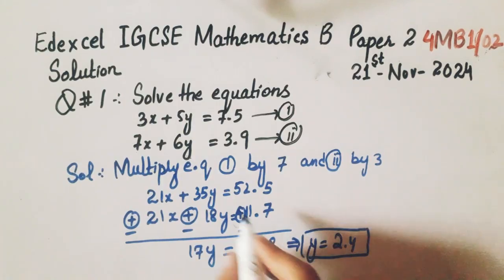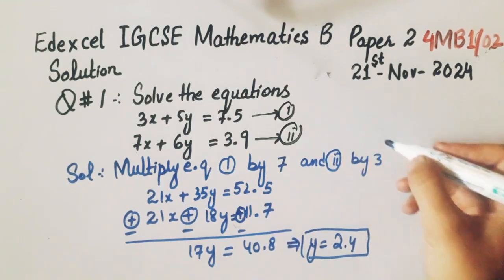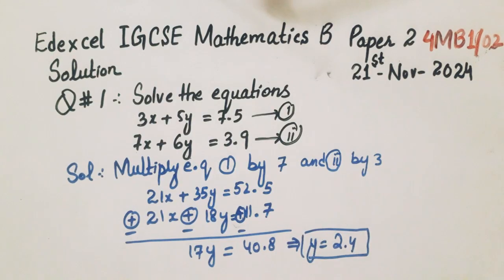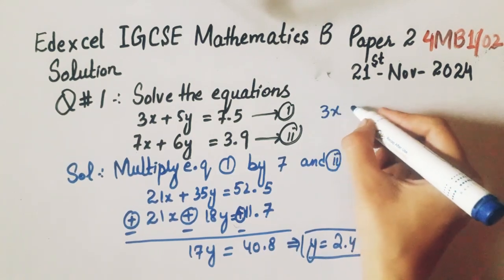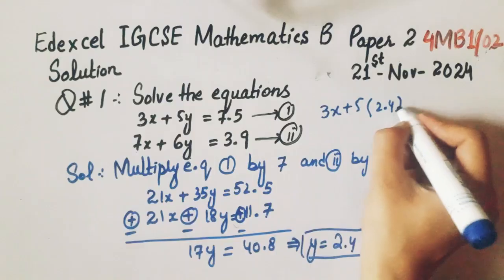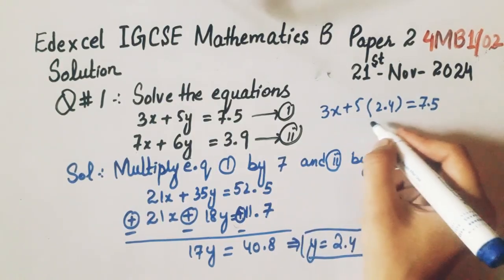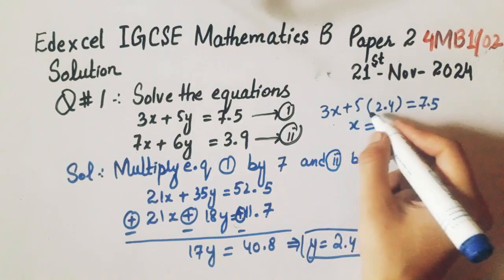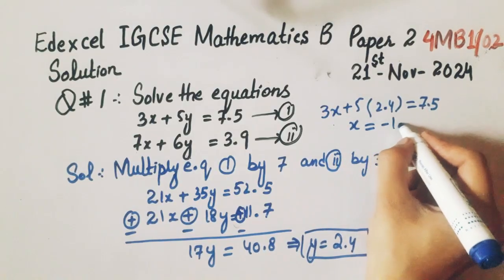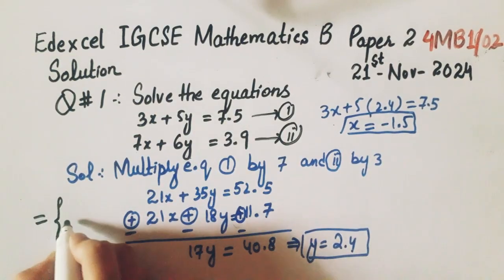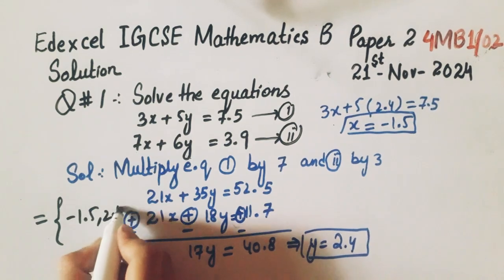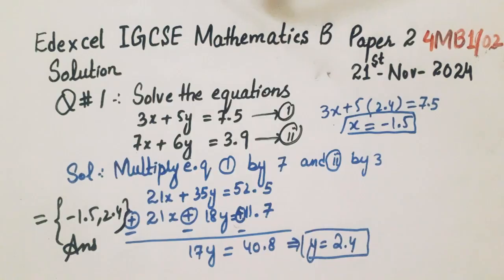Now put this value of y in any one equation, so you will get the value of x. We will put in the first equation: 3x plus 5 of 2.4 equals 7.5. Then we will get the value of x. After solving this with the help of calculator, x equals minus 1.5. So we will write the solution set as minus 1.5 and 2.4. So this will be the answer.